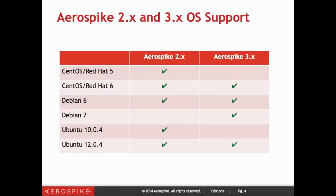One of the other differences between Aerospike 2 and 3 is the level of OS support. With Aerospike 2, there is additional support for Red Hat 5, CentOS 5, and Ubuntu 10.04. If you have an absolute requirement to be on one of these operating systems, you will have to use Aerospike 2 rather than 3. Otherwise, you're better off using Aerospike 3.